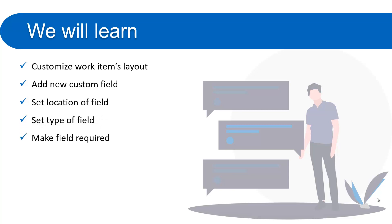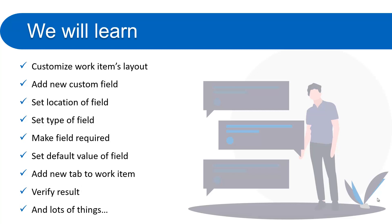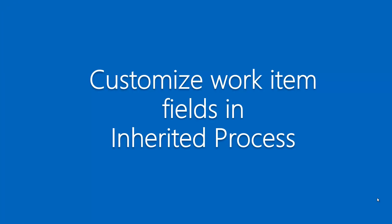We'll learn how to make a field required so that a member must fill it when making changes to a work item. We'll also cover how to set default values — for example, displaying a default string automatically in a text box. Additionally, we'll learn how to add a new tab to a work item, alongside the existing Details, History, and Attachments tabs. We'll verify all results in the project created using that process.